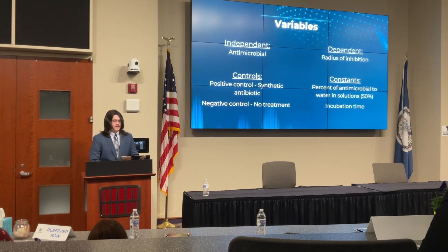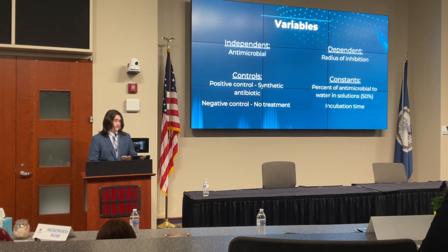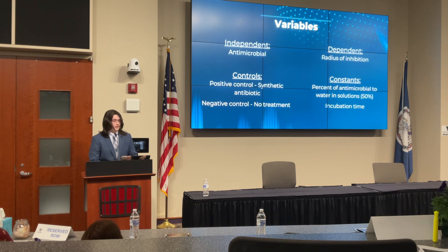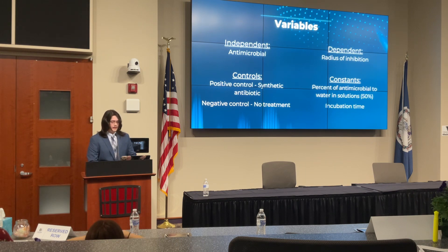For my experiment, the independent variable was the type of antimicrobial used, and the dependent variable was the resulting radius of inhibition from the antibiotic test conducted in the lab. I had both a positive control and a negative control. The positive control is the test group expected to have significant inhibitory effect on the bacteria, so I used ciprofloxacin, a synthetic antibiotic, since it is known to inhibit the growth of E. coli, the bacteria of choice. Conversely, the negative control is the group not expected to have any significant effect. For this, I used a small paper disc without any antimicrobial added to the agar plates to ensure a lack of bacterial growth was not caused by confounding variables. The constants were the percent of antimicrobial to water in the solutions and the time spent in the incubator, which was 24 hours.